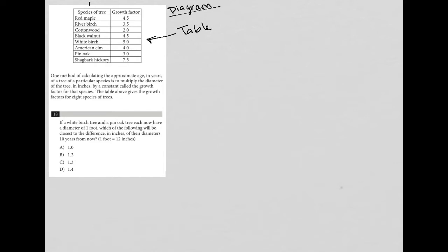So this table provides us with a list of different species of trees and also the growth factor that corresponds to those species. The information here says one method of calculating the approximate age in years. So I'm calculating the age. So calculating the age in years of a tree of a particular species is to multiply the diameter of the tree.